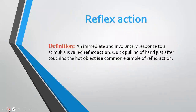The second topic is reflex action. Definition: an immediate and involuntary response to a stimulus is called reflex action. یہ ایسا body کا action ہے جو brain control نہیں کرتا — یہ ایک involuntary action ہے جو کسی بھی stimulus کے خلاف بہت تیزی سے ہوتا ہے۔ For example, quick pulling of the hand just after touching a hot object is a common example of reflex action.